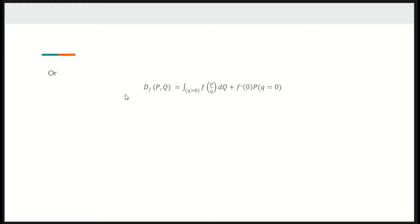Alternatively, F-divergence can also be written as this equation considering only Q. We define 0 times F of infinity equals 0 and 0 times F-star of infinity equals 0 even when F of infinity and F-star of infinity are infinity.